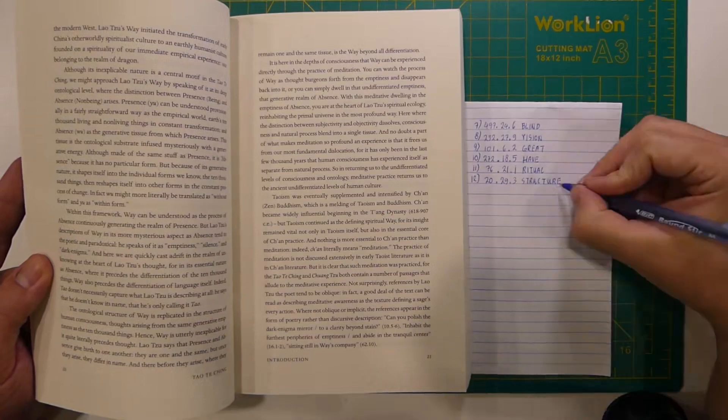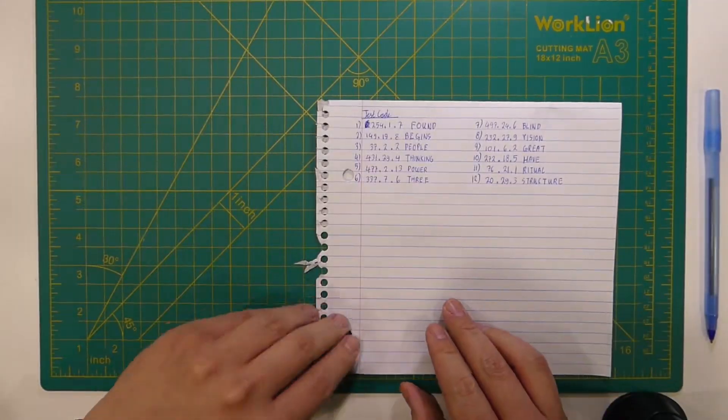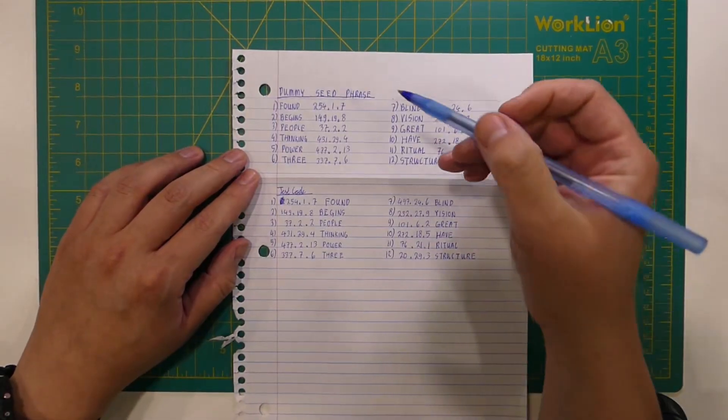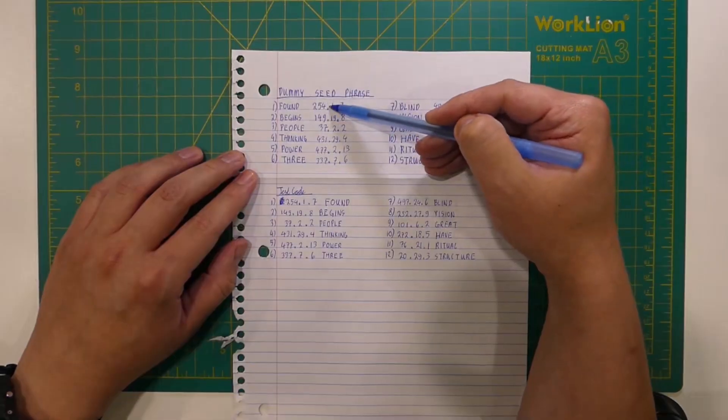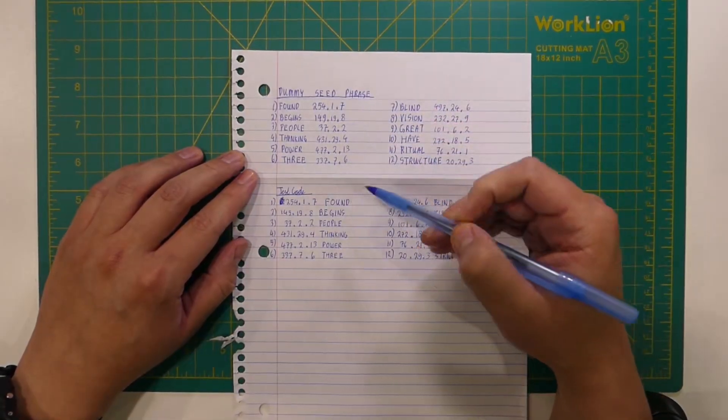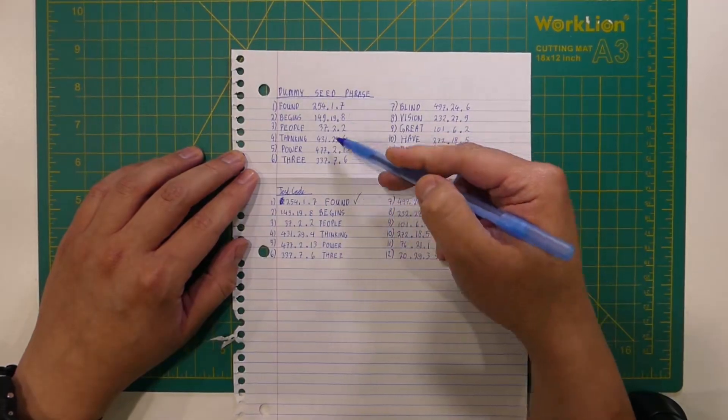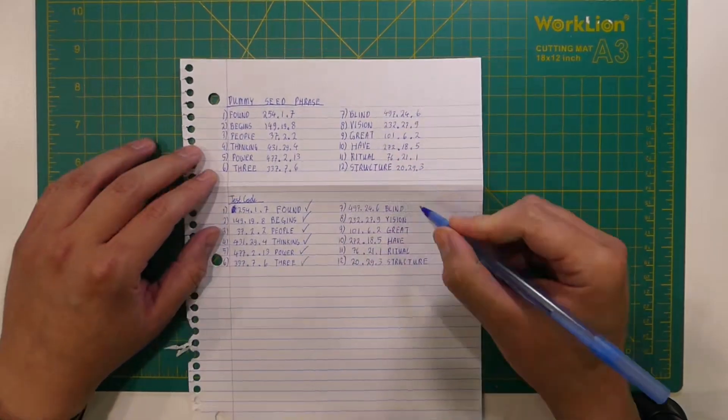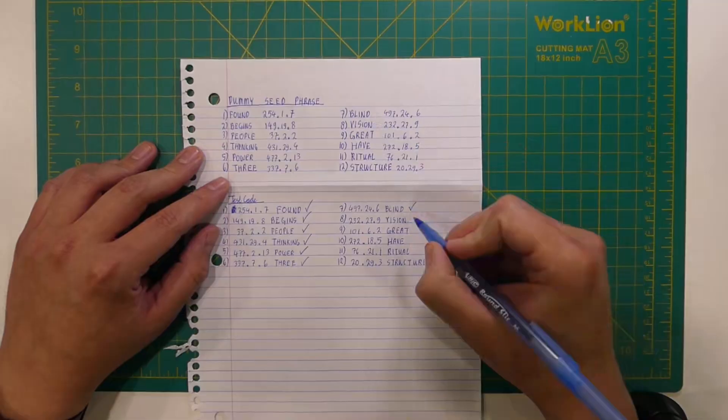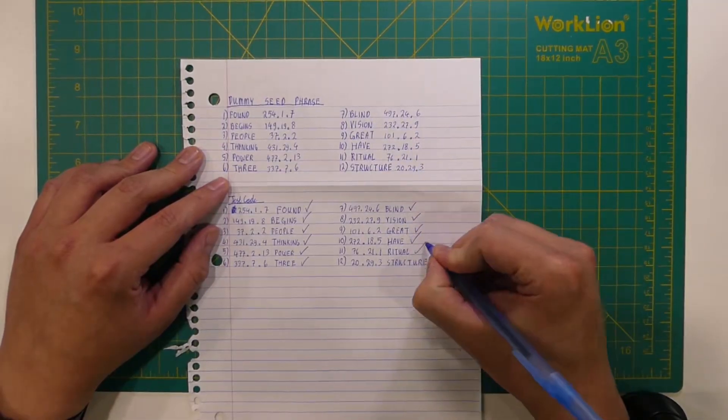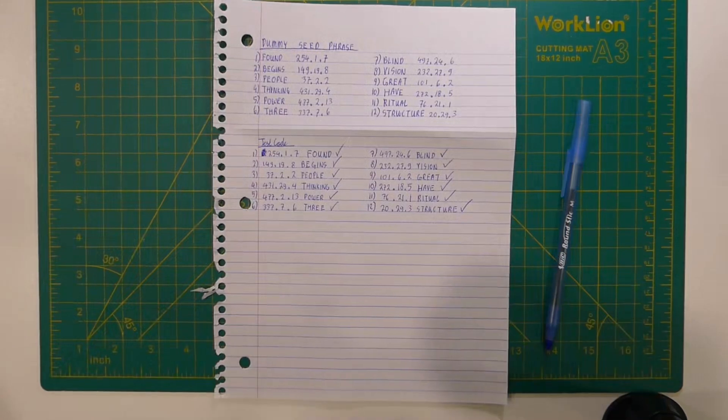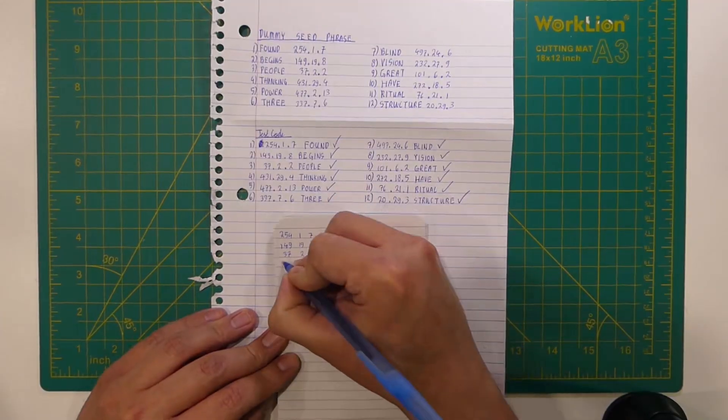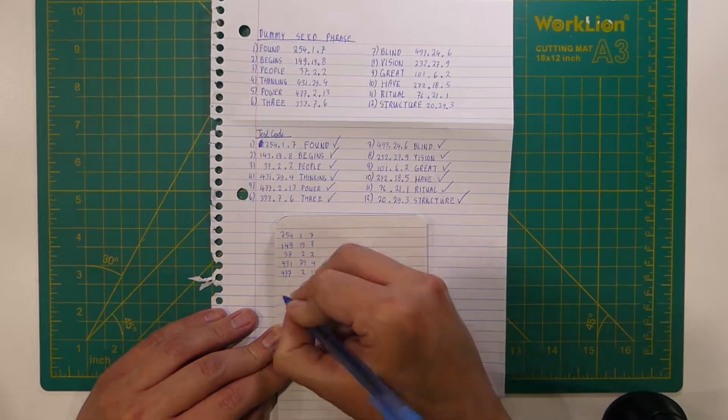Once I'm done with that, I found my codes are correct. I will keep the codes and destroy the original version, and then I am done.